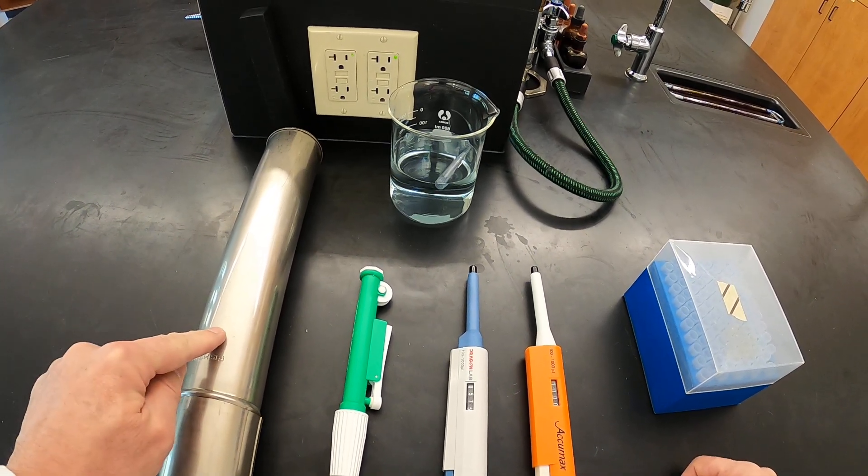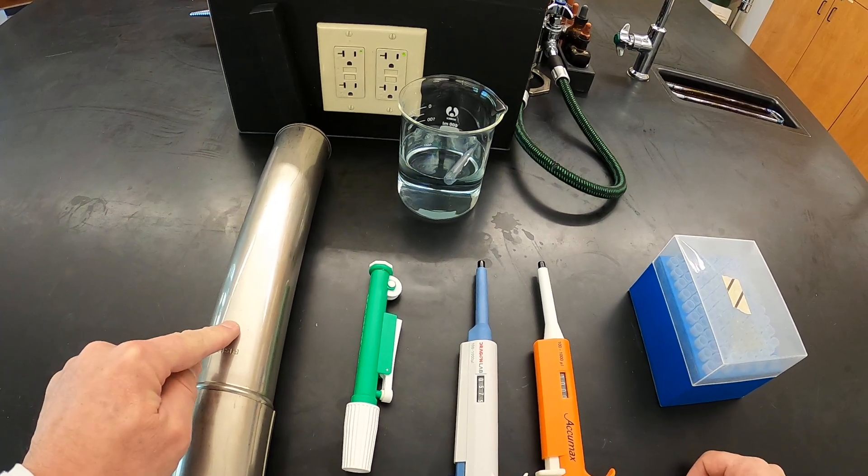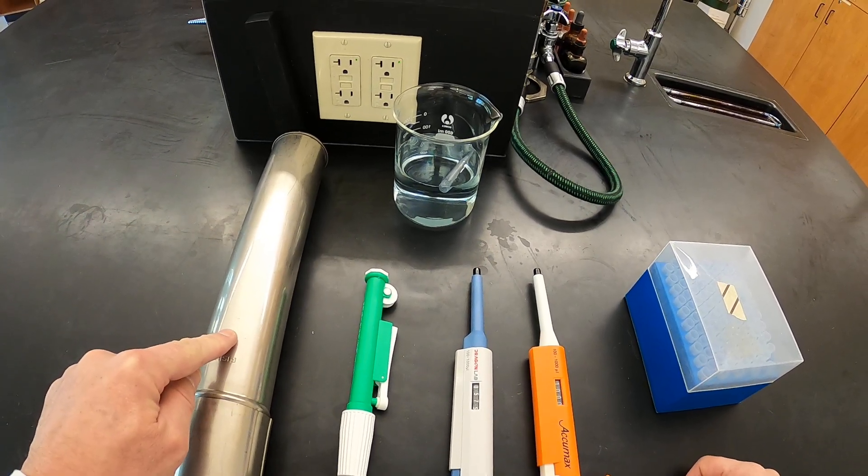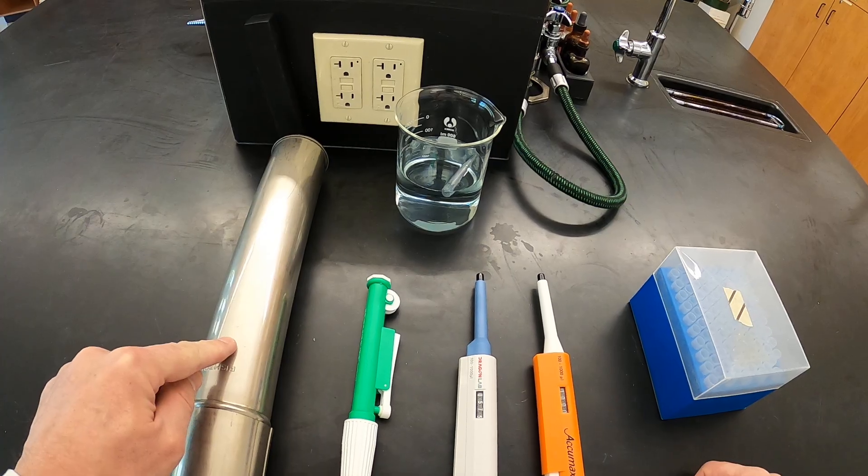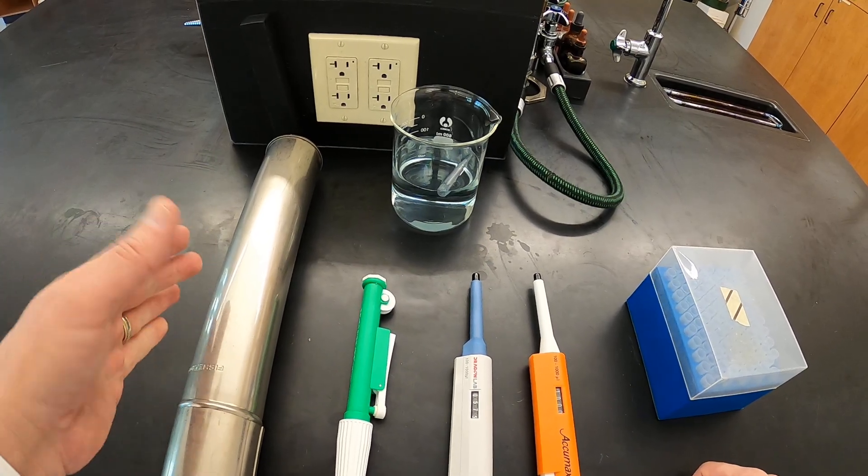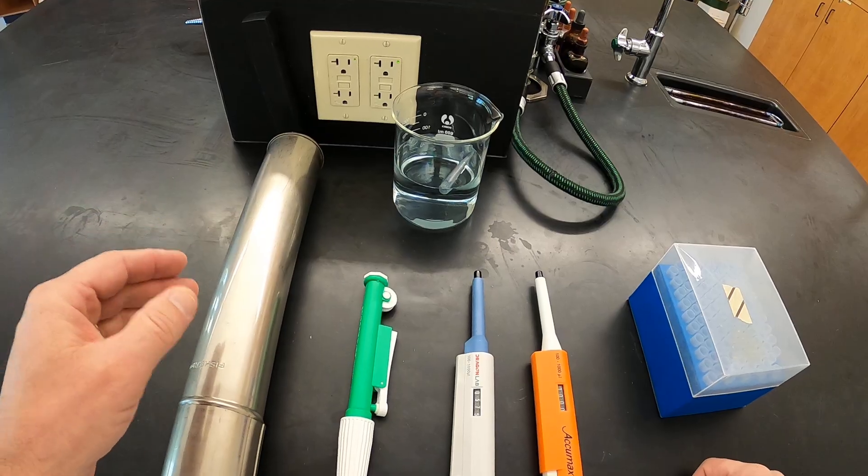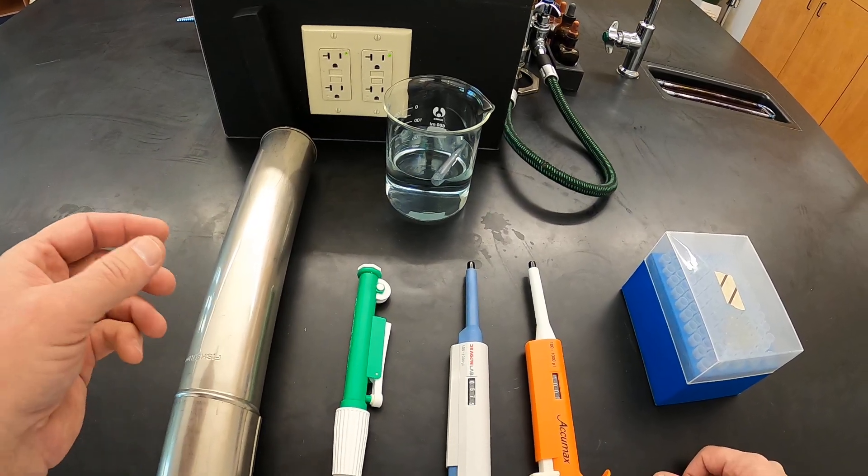The first type of pipettes are going to be stored inside of a sterile container like this one. This particular one has not been sterilized, but I'll show you how to take the pipettes out once it has been.